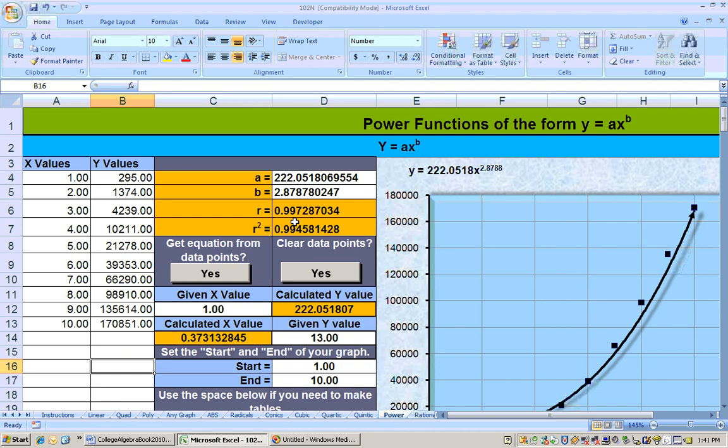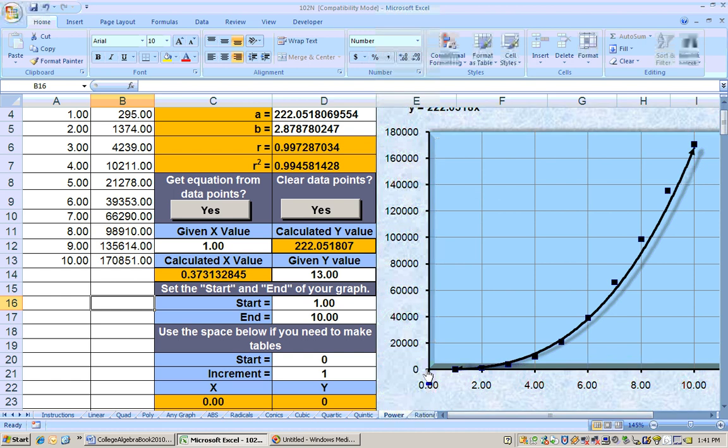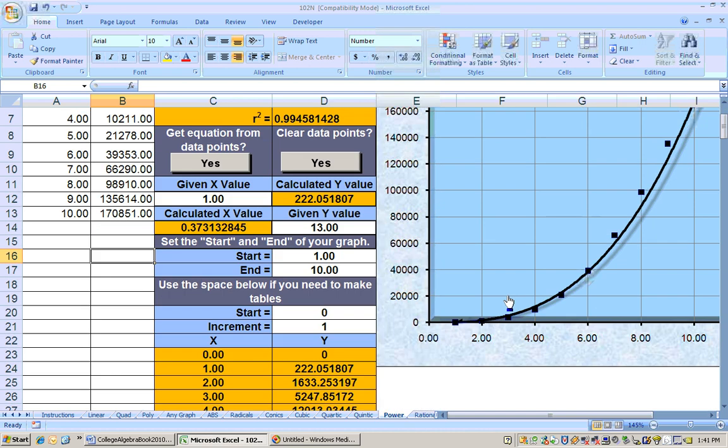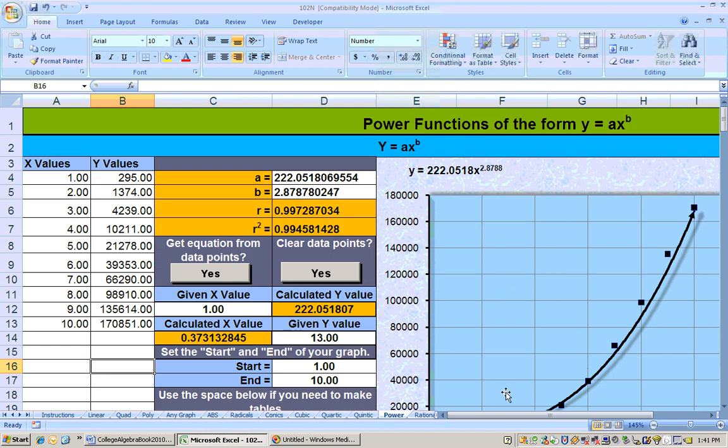Now, power functions are monotonic. That's a key vocabulary word with this section, and monotonic means that the graph goes in one direction. Like this graph is going up, and that's the only direction it's going. It's going up. It's not going to turn around and come back down, and you have max or mins or anything like that. It just keeps on going up.